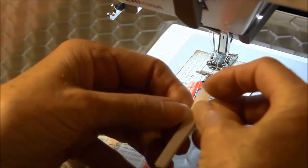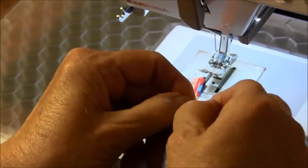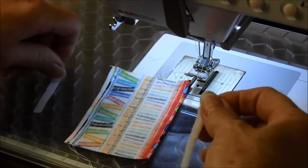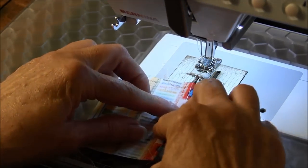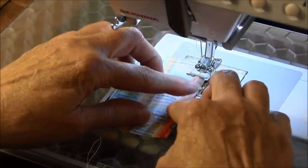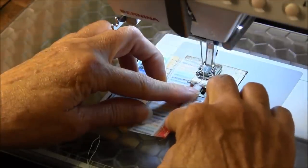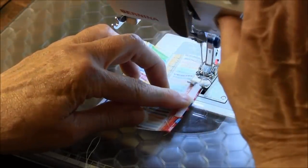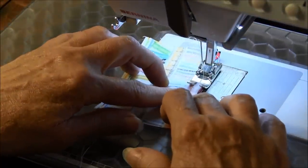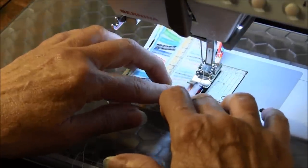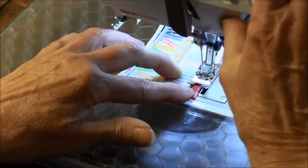We're going to take our 2 inch piece of velcro and center it and sew it down. For this I'm back tacking. I'm going to back tack at the other end. That's just sewing in reverse.